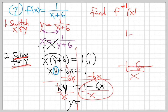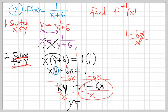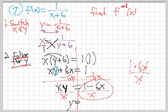If it were 1 times 6x, you could cancel the x's, but with addition or subtraction they're a package deal. You take all or nothing. So we're done — the inverse function is (1 minus 6x) over x.